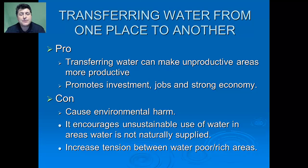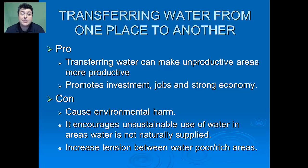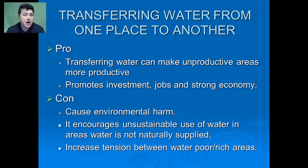If dams and reservoirs aren't our long-term solution, what about transferring water from one place to another? Transferring water can make one unproductive area more productive. Taking water from the Colorado River to irrigate the Nevada desert allowed for the construction of Las Vegas, which promoted jobs, investment, and helped strengthen the local economy.